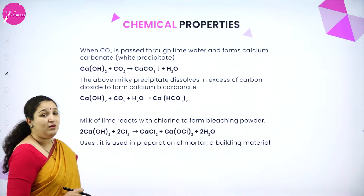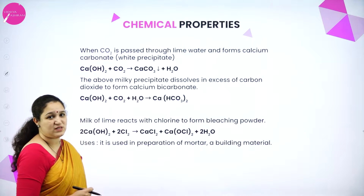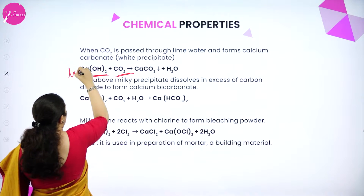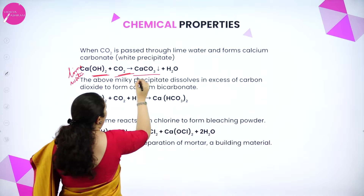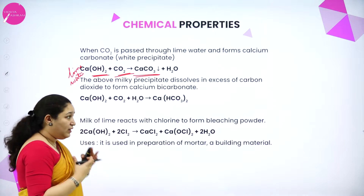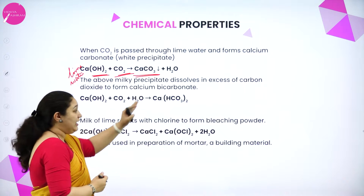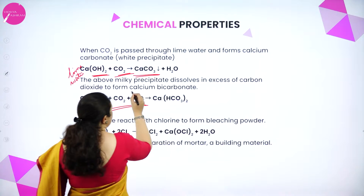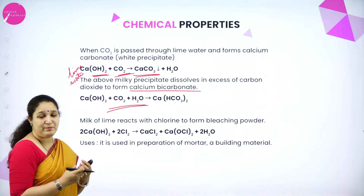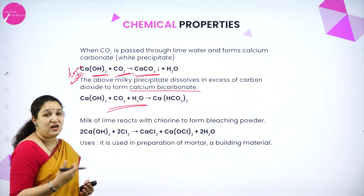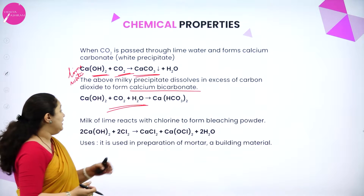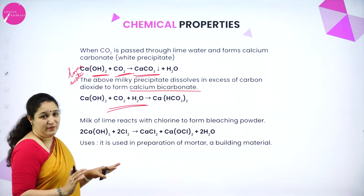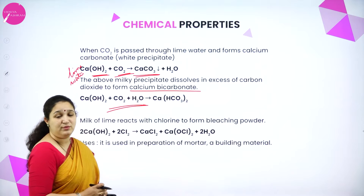Coming to the chemical properties of calcium hydroxide or slaked lime: if we pass carbon dioxide to lime water, we get a white precipitate of calcium carbonate. If excess carbon dioxide is passed, the milky white precipitate dissolves because it gets converted to soluble calcium bicarbonate.